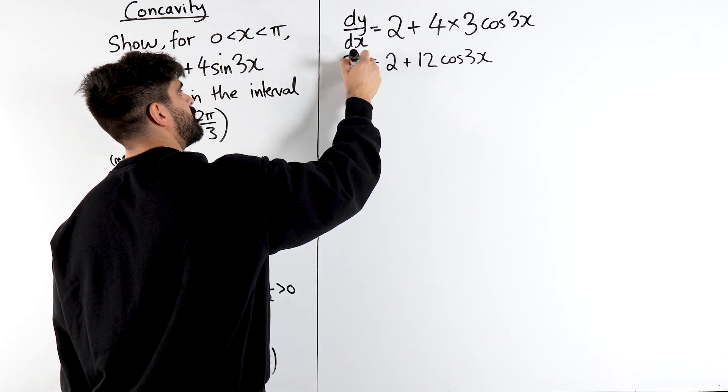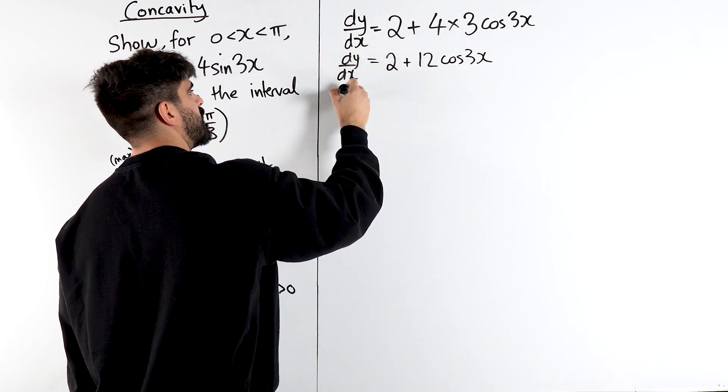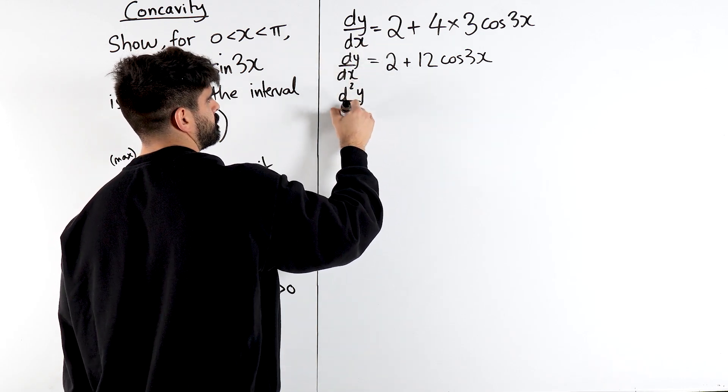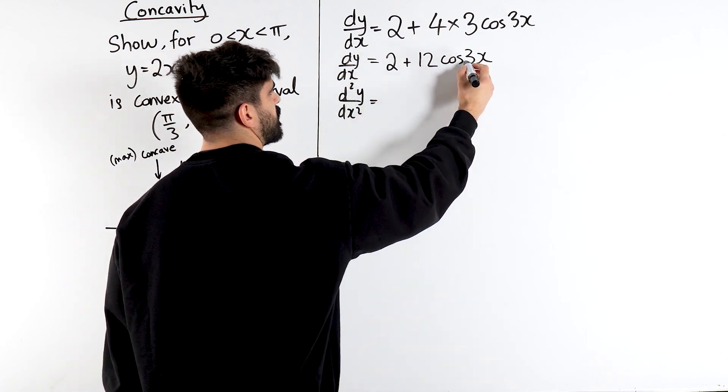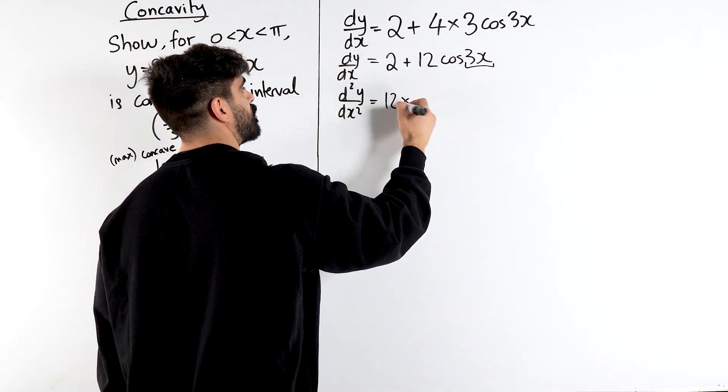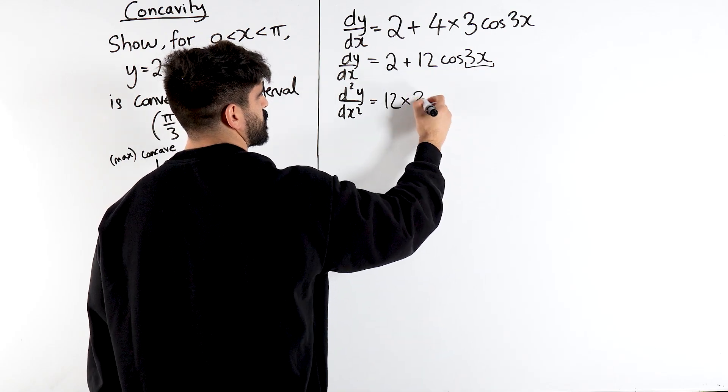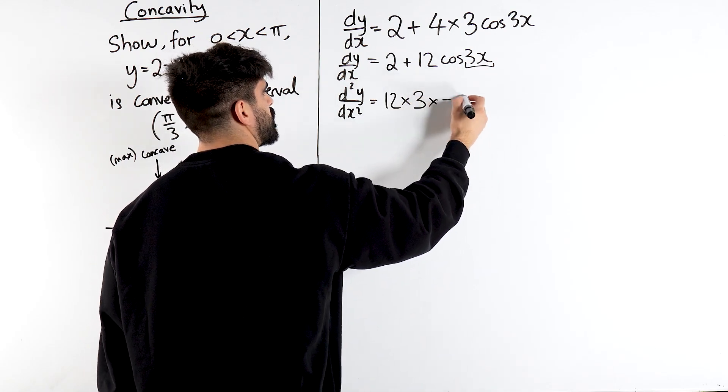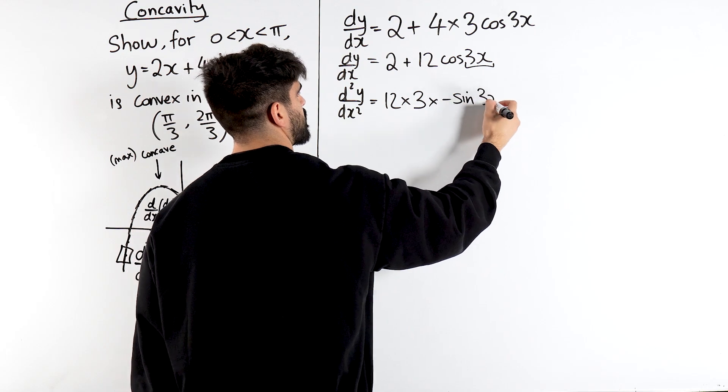Now that's just the first derivative. We're going to have to differentiate that again. So the 2 is going to go. Differentiate the angle first. Remember 12 is just a multiplier. 3x just differentiates to 3. Cos differentiates to minus sin. Angle stays the same.